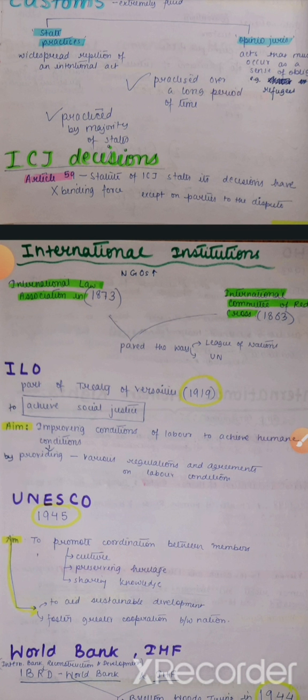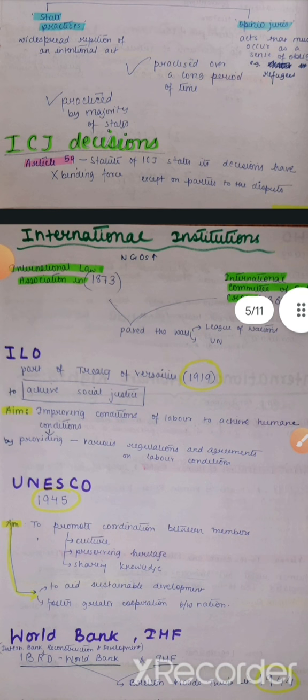ILO was part of the Treaty of Versailles in 1919. Its aim is to achieve social justice by improving the conditions of labor — to achieve humane conditions of work. It provides various regulations and agreements on labor conditions. Toh jo humare workers hain, factory mein ya kisi bhi jagah kaam karte hain, unki jo working conditions hain, woh respectful honi chahiye.